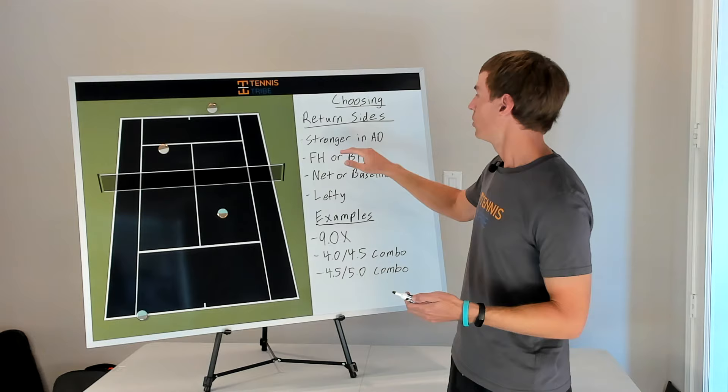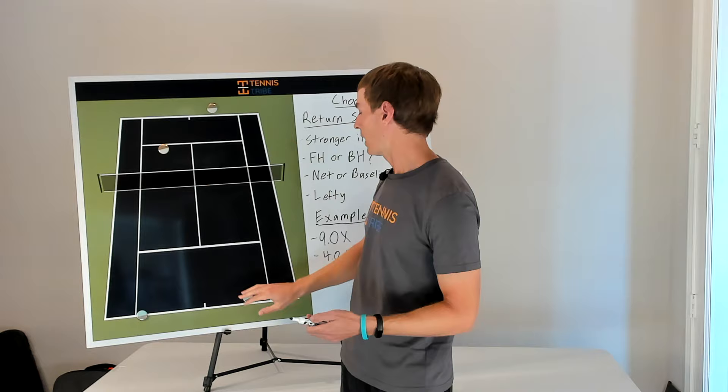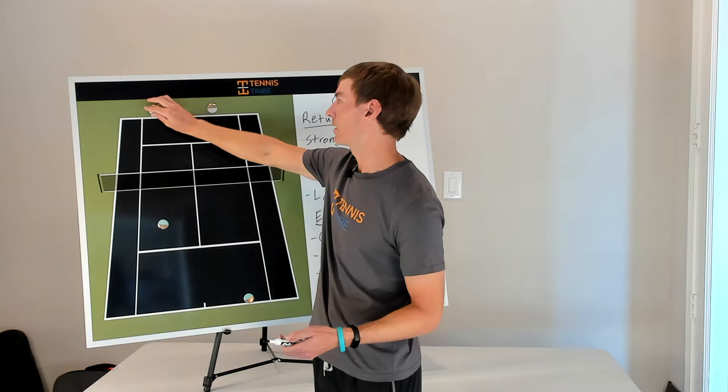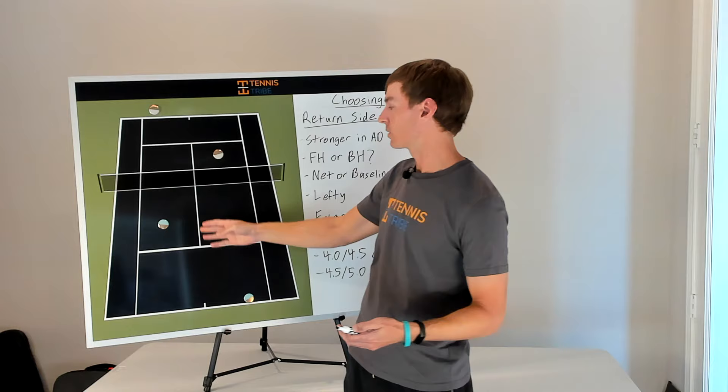Obviously, you want to consider your forehand and backhand return. So if I love my forehand return cross court, I'd probably want to play in the deuce court. If I love my backhand return cross court, you might want to play in the ad court. This is going to depend on your skill level as well. If you're at a lower level, they probably can't hit this T-serve with a lot of consistency. At a higher level, they might be able to.